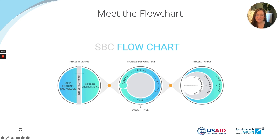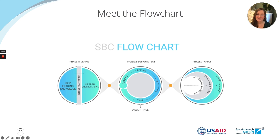Once we've synthesized testing feedback into a prioritized suite of solutions, we move into the third phase — the apply phase — to start progressively implementing those solutions with real-time monitoring and evaluation to assess their success and to continue adapting and refining those solutions during scale-up. The design process never ends, but that is a broad overview of the flowchart.